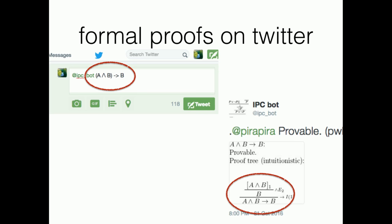So this is formal proofs on Twitter. You can access it on Twitter. There's a bot, it's written here, ITC bot. You can send a message, you can tweet to it, you can send a formula, and it says provable or not provable. And when it's provable, it shows you some proofs in a figure. A friend of mine wrote it.